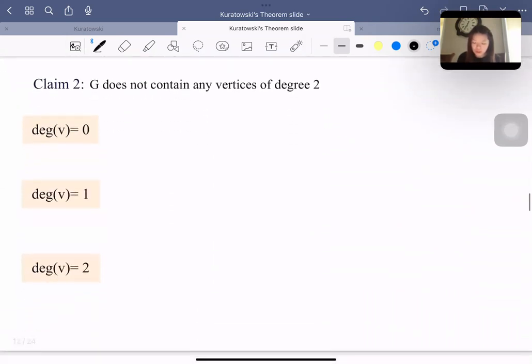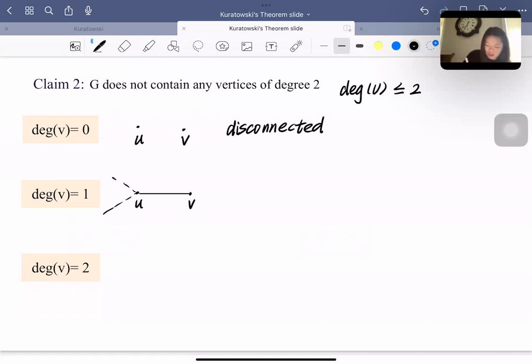And Claim 2: G does not contain any vertices of degree ≤2. So suppose there exists a vertex v, and we try to show degree of v is less than or equal to 2, and prove the claim by contradiction. So the vertex v can be degree 0, but in this case, v is disconnected. And if degree of v equals 1, we connect uv to vertices, and in this case, u will be the cut-vertex in the graph.